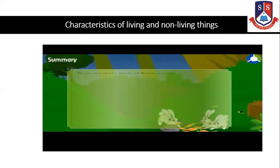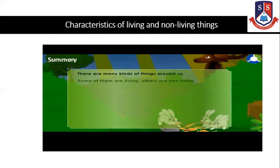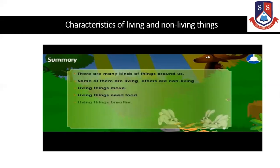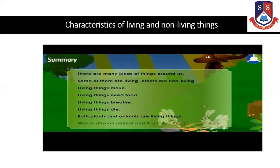Summary. There are many kinds of things around us. Some of them are living, others are non-living. Living things move, need food, breathe, and die. Both plants and animals are living things. Man is also an animal and is a living thing.